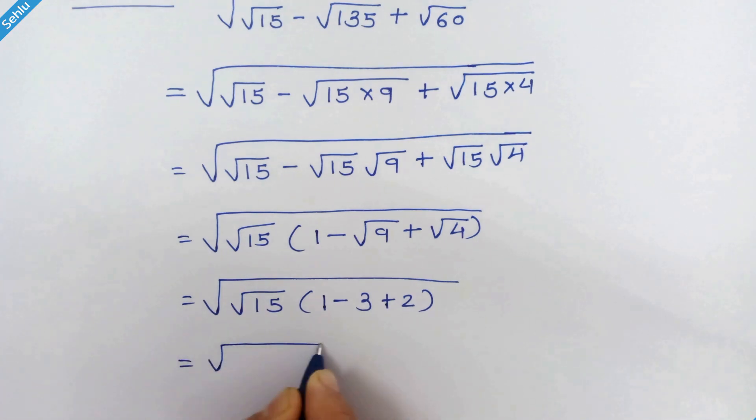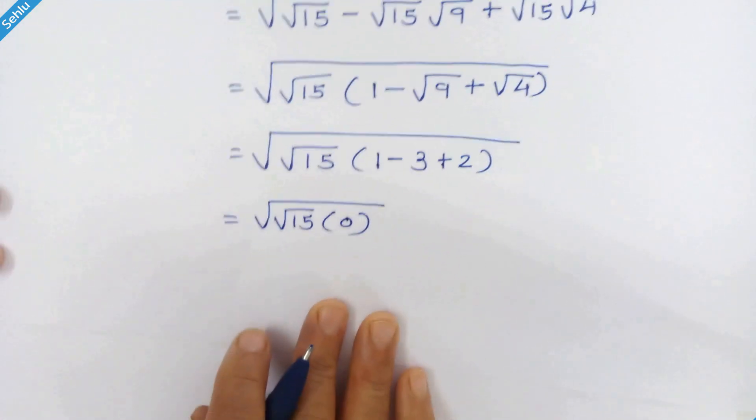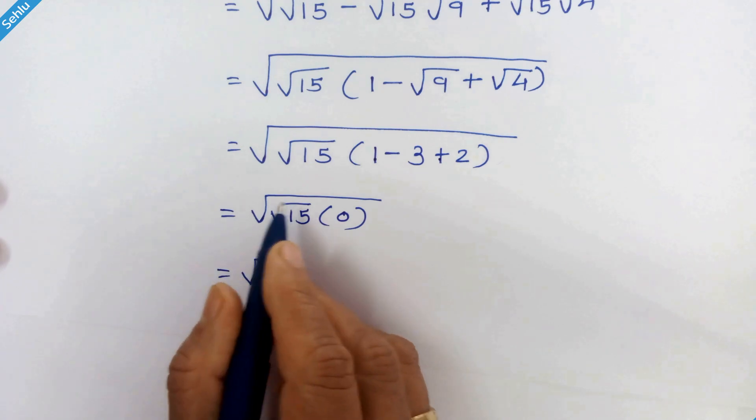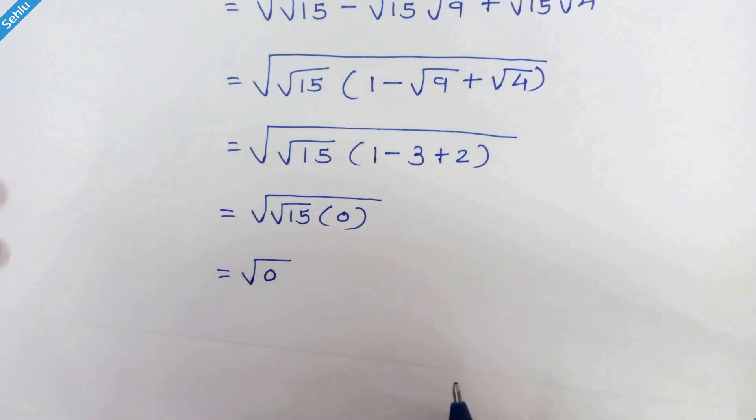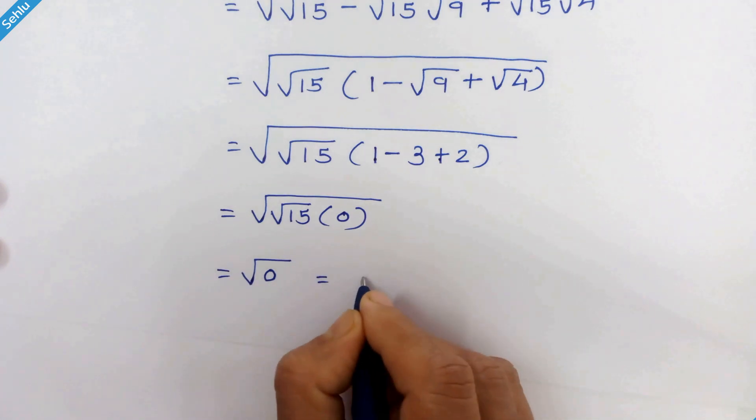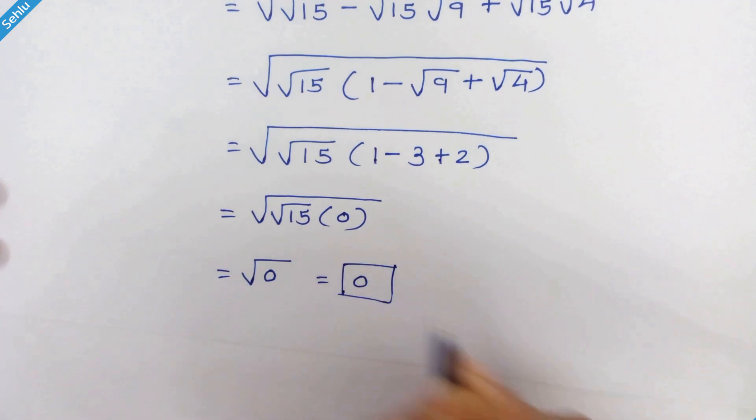So we can write it like square root of square root 15 times 0. Now square root of 15 times 0 is square root 0, and square root 0 is 0. That's our answer.